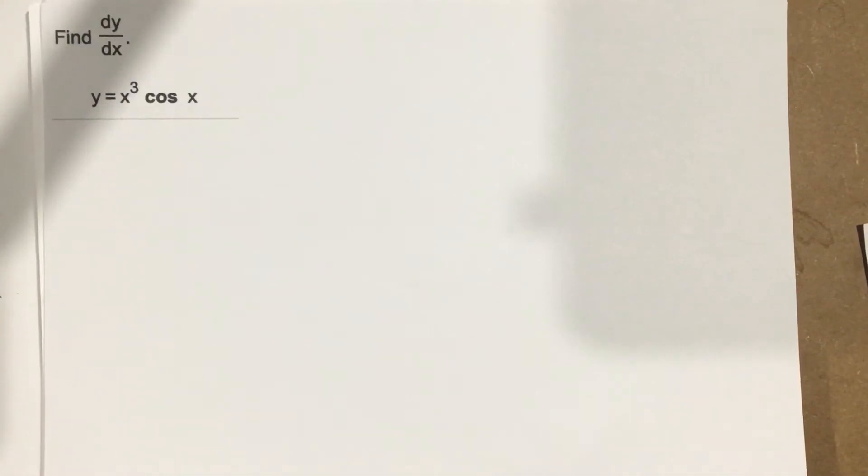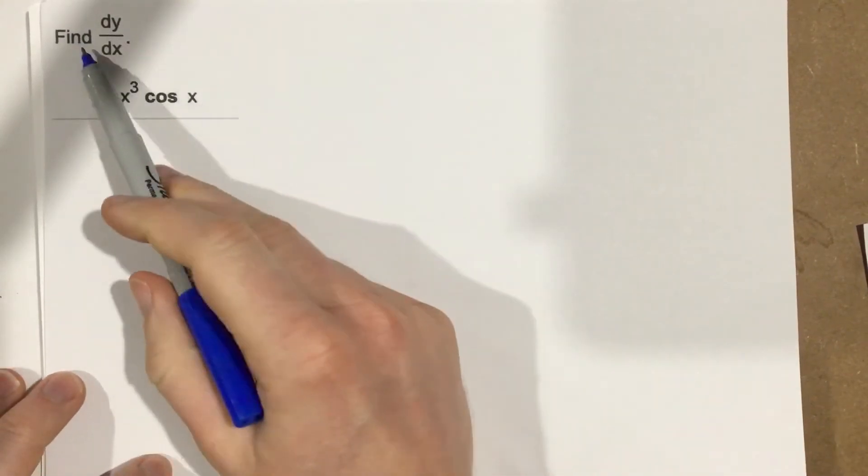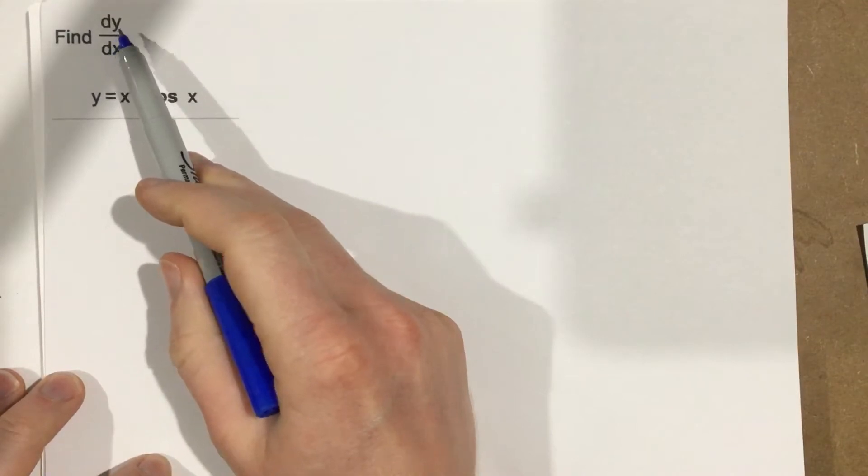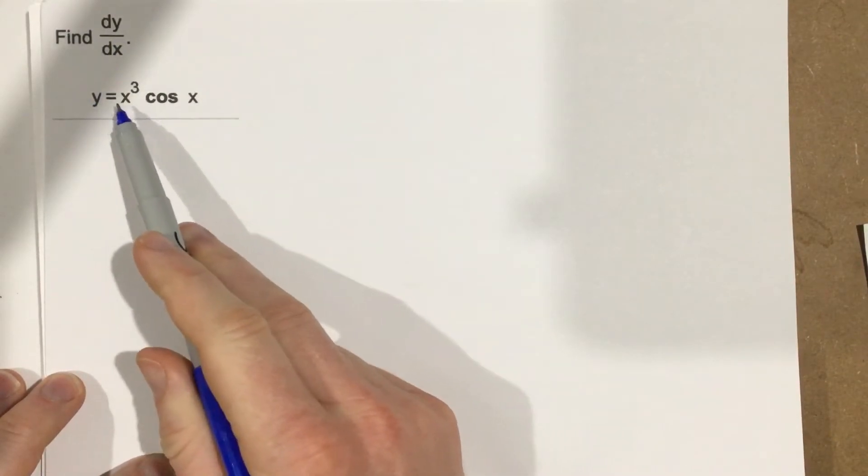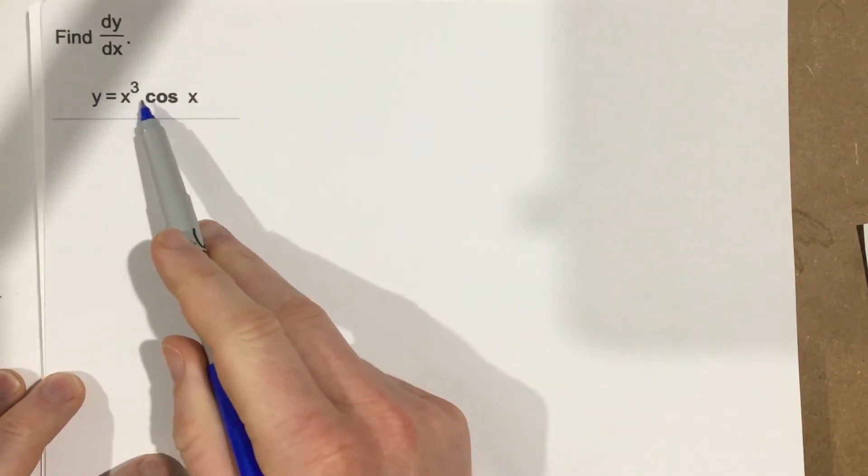This is problem number two from section 3.5 and this problem says find the derivative of y with respect to x. We have y equals x cubed times cosine x.